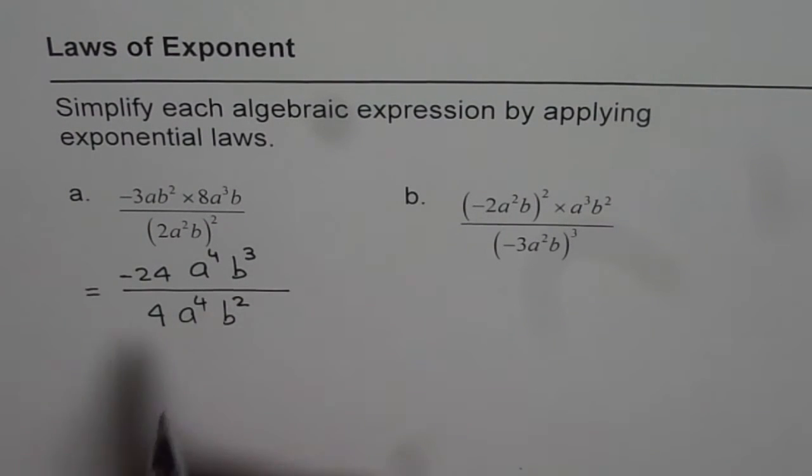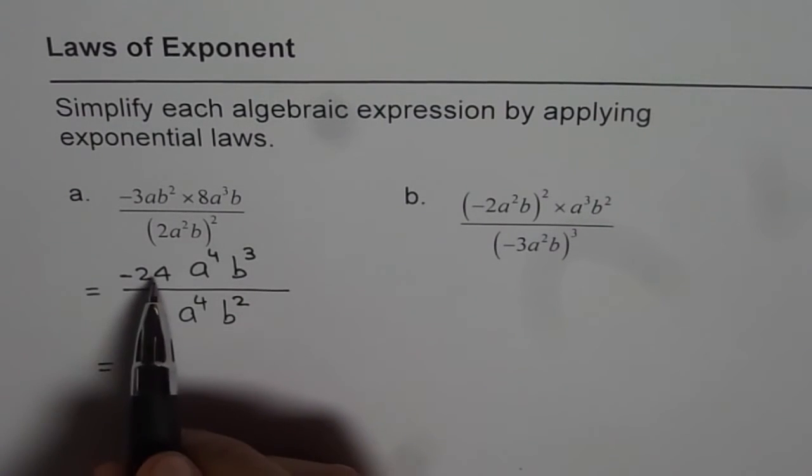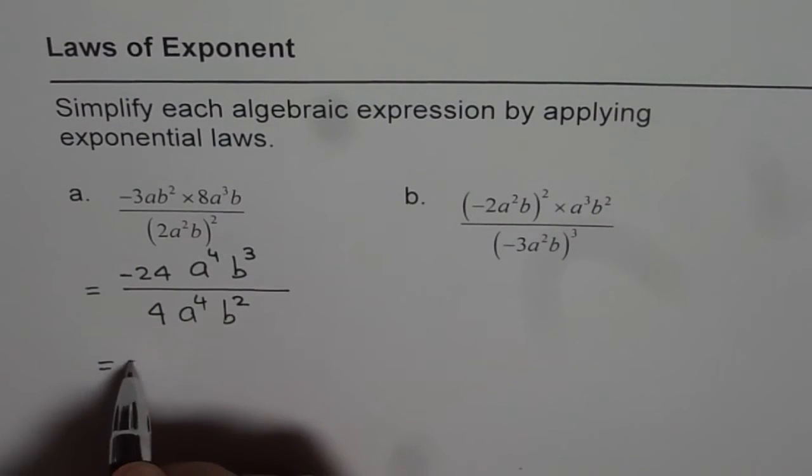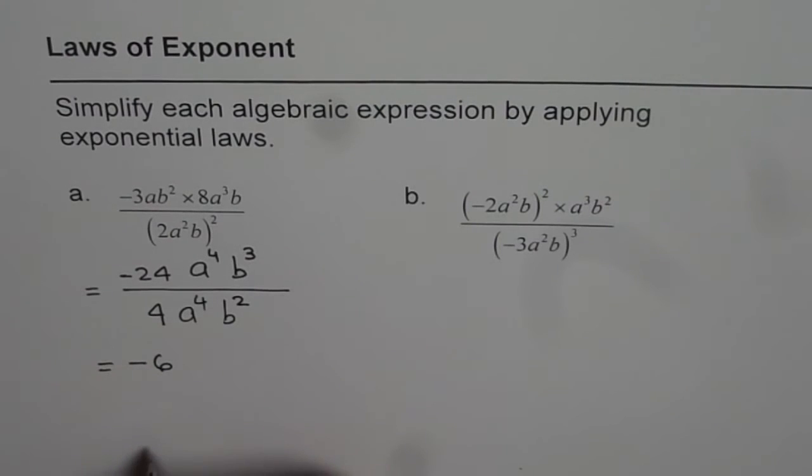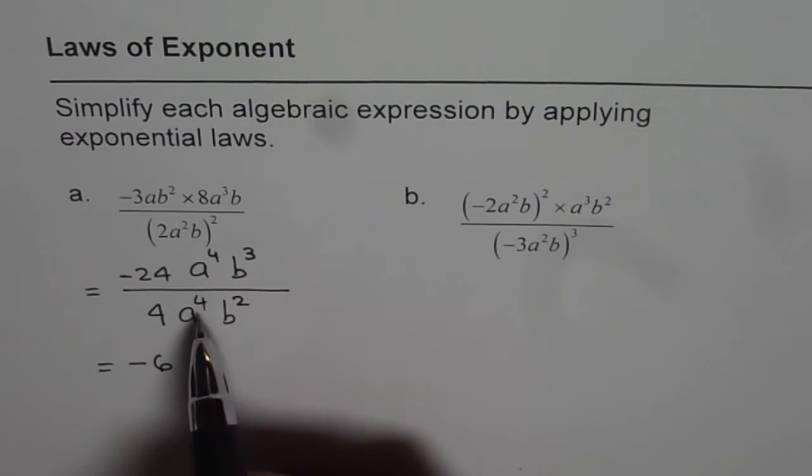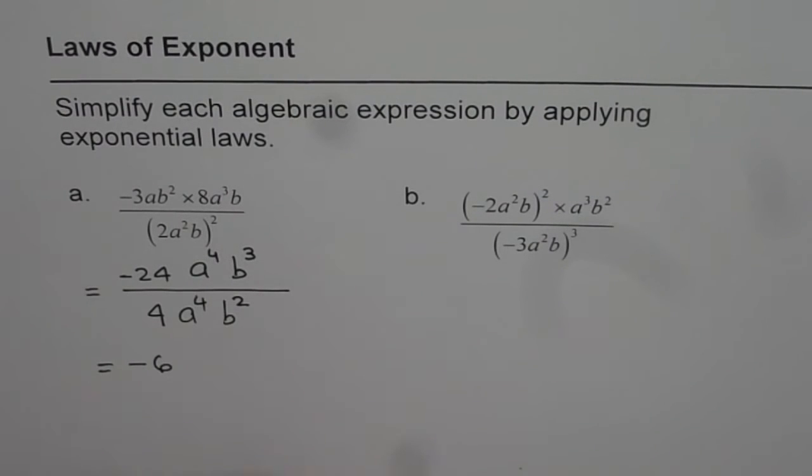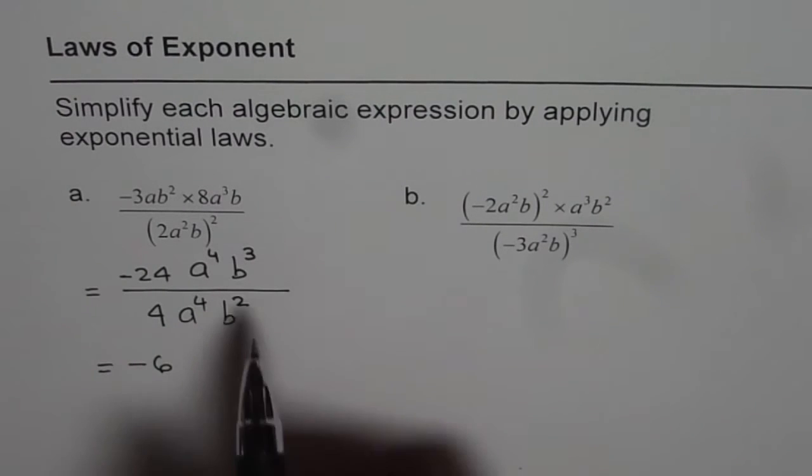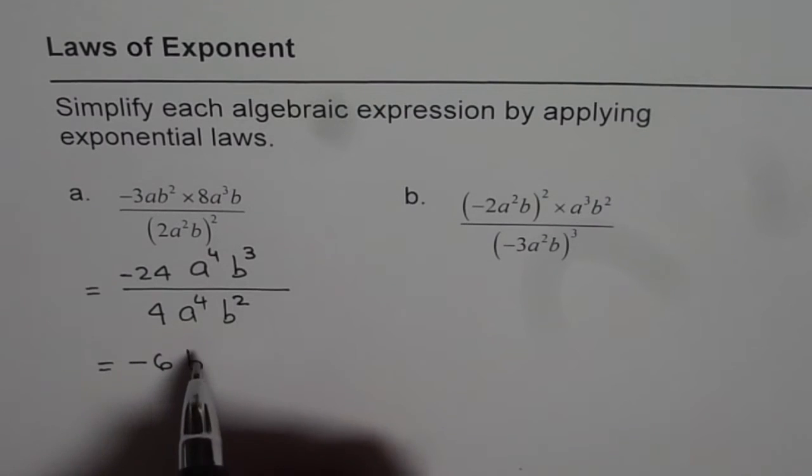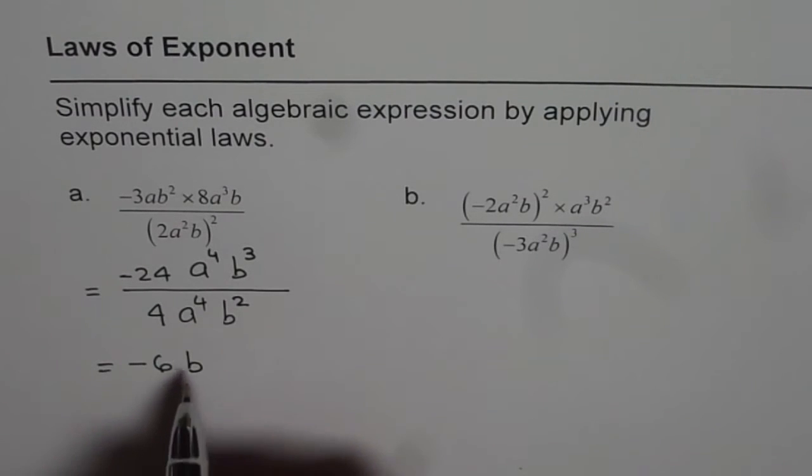Now, we'll apply the quotient rule. Minus 24 divided by 4 is minus 6. So we get minus 6 first. a to the power of 4 divided by a to the power of 4 is 1. 4 minus 4 is 0. Anything to the power of 0 is 1, correct? So we get 1. And in case of b, 3 minus 2 is 1. Good practice is not to write 1, it is assumed to be 1. So minus 6b is your answer.